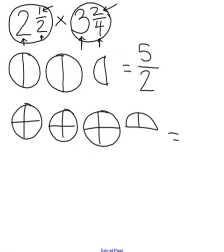So now I need to count up all of my pieces. I have four, eight, twelve, and fourteen. So I have fourteen total pieces. And how many pieces are in each hole? Four.